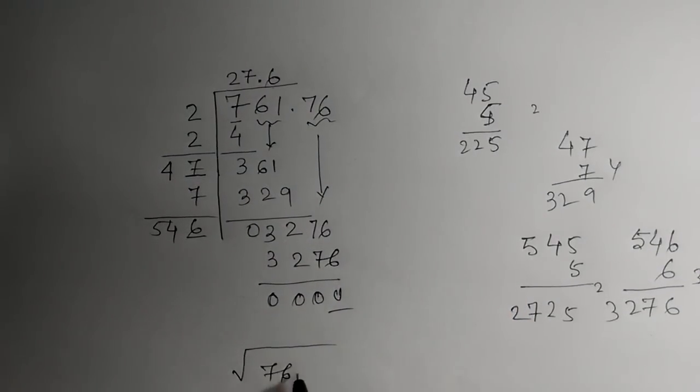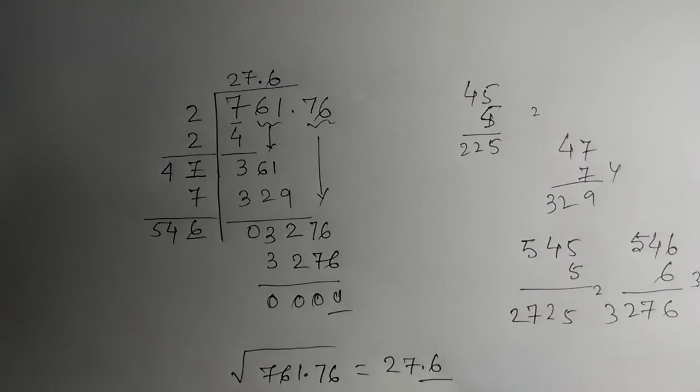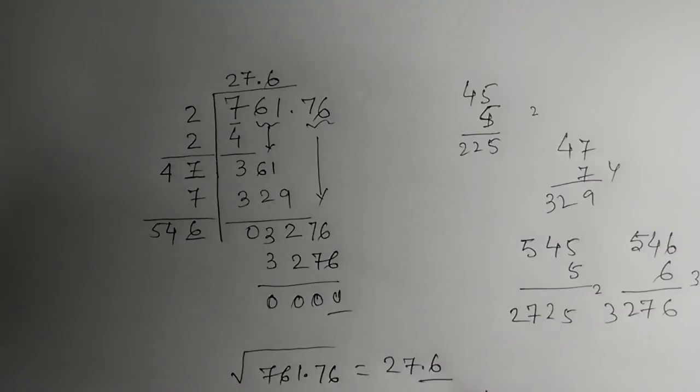So we saw that the square root of 761.76 is equal to 27.6. By this method we can find the square root of decimal numbers. Hope you like this trick.